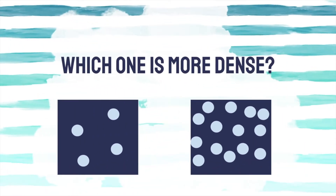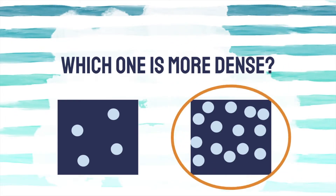So if we look at these two squares, which one is more dense? Which one has more matter? If you said the picture on the right, you are correct. There are more little circles on the square on the right than on the left.